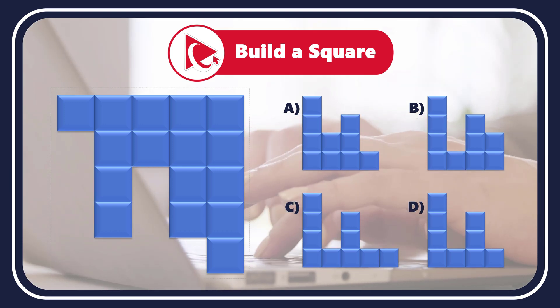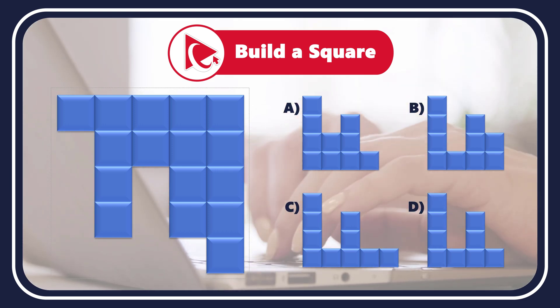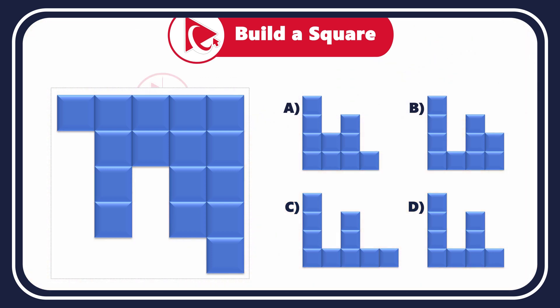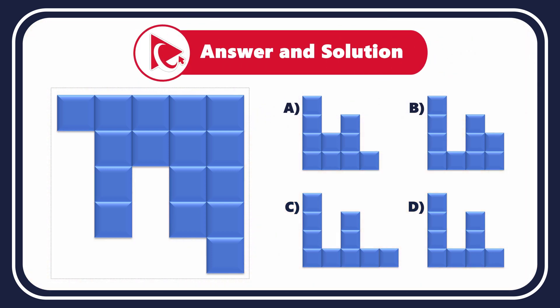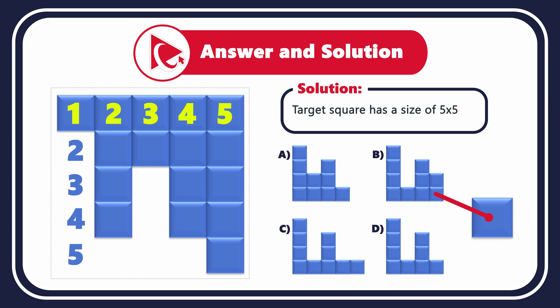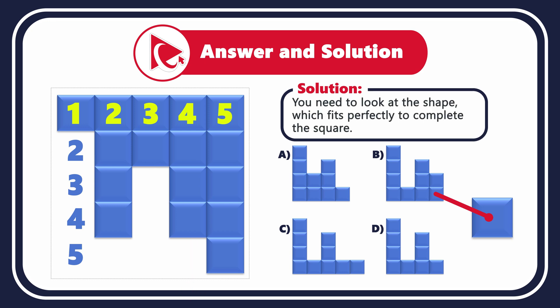If you have any unique ideas, please share them in the comments for everyone's benefit. Let's first confirm what we're dealing with. Here we have a target square of size 5 by 5. The target square consists of small squares, and some at the bottom part of the large square are missing. Our goal is to find the shape which fits perfectly to complete the large square.